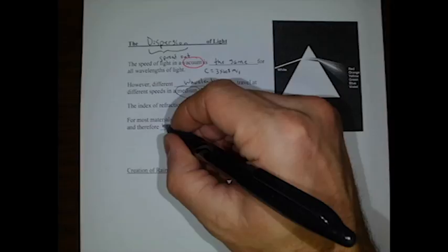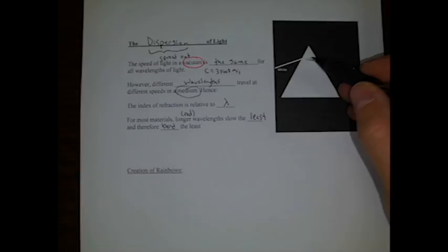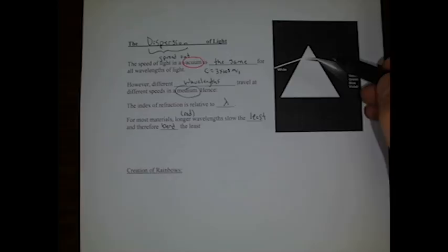So we see this white light, which is comprised of all the colors, coming into the prism, refracting. Refracts here and it also refracts there. So two refractions. And in both places, the red just bends a little bit. But the blue and violet bend a lot more and end up in different places.